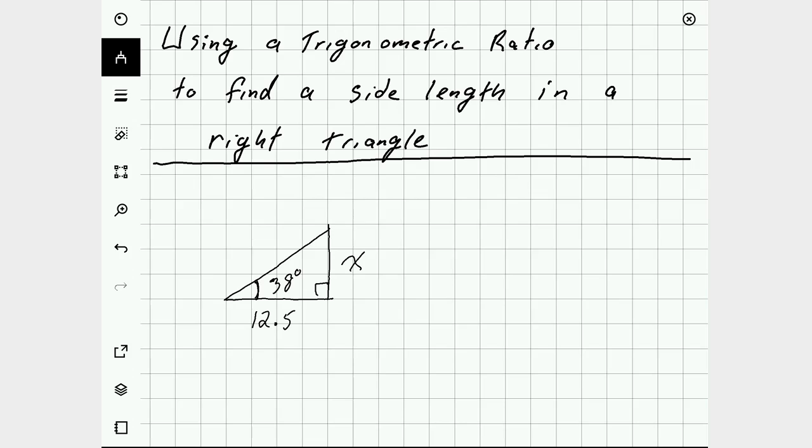Let's say that this bottom leg of the triangle measures 12.5 and the angle in question is 38 degrees.